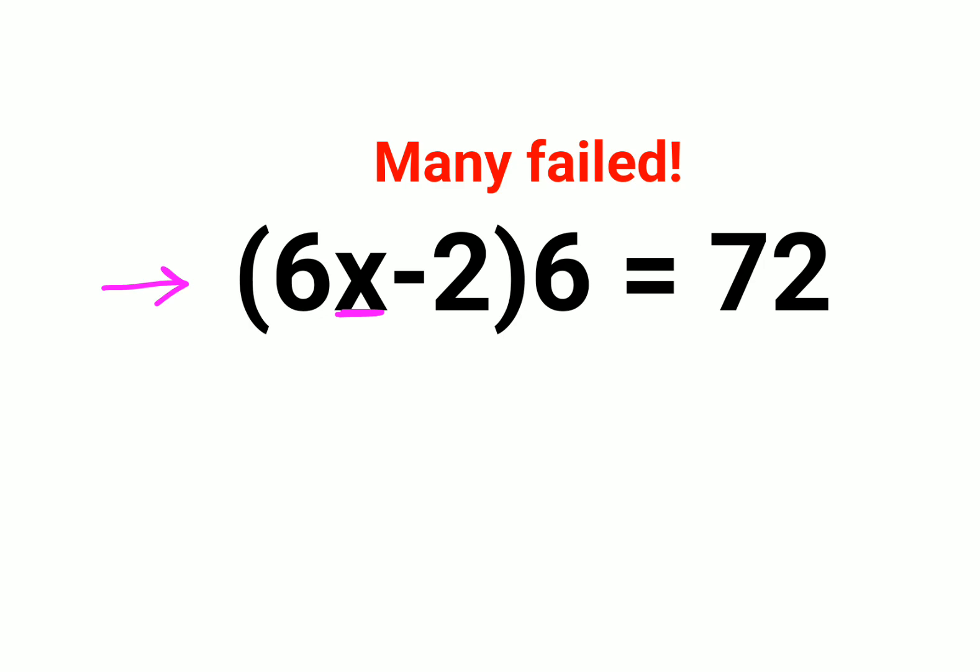So in this case, please understand we always go from outside towards inside. So first we will look at our question which is what, 6x minus 2 the whole is getting multiplied by 6 equals to 72.